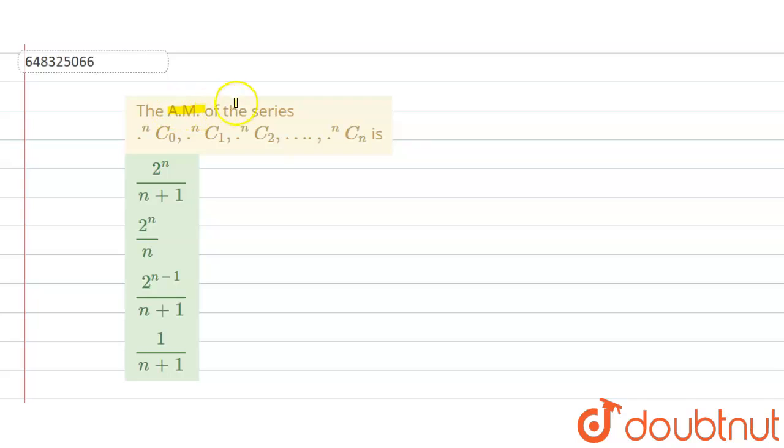In the following question, we have to find the AM of the series nC0, nC1, nC2, ... nCn. Four options are given: 2^n/(n+1), 2^n/n, 2^(n-1)/(n+1),